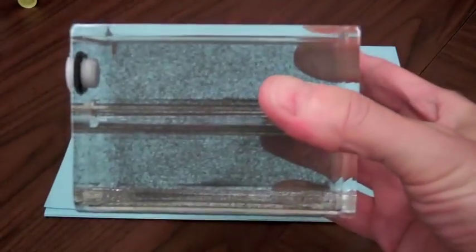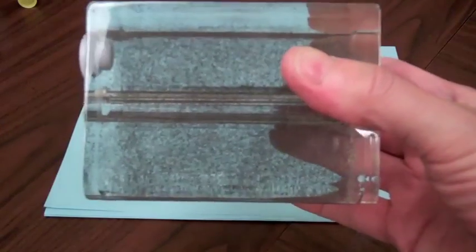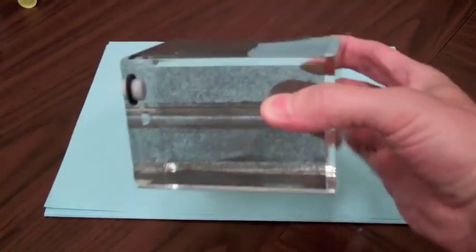What I'm going to do is shake this to get a uniform distribution of the iron filings, and then I'm going to insert a bar magnet and we're going to watch what happens.